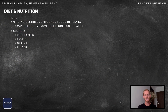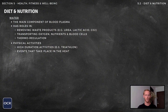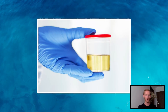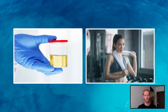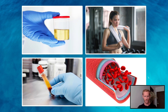Fibre is the indigestible substance found in fruits, vegetables, pulses and whole grains. Getting plenty of dietary fibre may help to improve digestion and gut health, so it's an important consideration regardless of your exercise habits. The final nutrient is water, which assists in removing waste products from the body, helps to regulate body temperature through sweating, and is the main component of blood — making it responsible for transporting oxygen and other nutrients to the body's tissues.